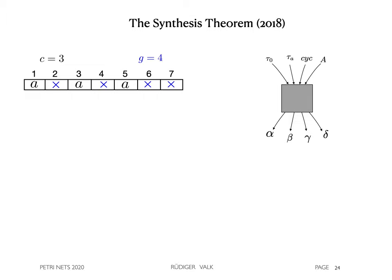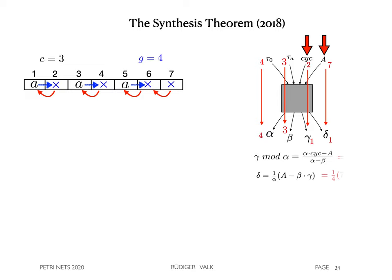The synthesis theorem can directly be applied to the circular traffic queue model with anonymous cars. We obtain beta equals 3 as there are 3 enabled cars and alpha equals 4 as there are 4 release messages. With capital A equals 7 transitions and CYC equals 2, we obtain the cycloid 4, 3, 1, 1 again.